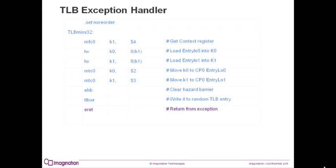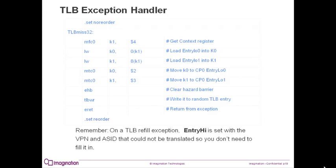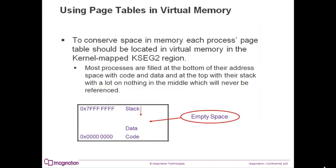Last, we use the return from exception instruction to go back to normal processing. The last line, .setReorder, tells the assembler that it can continue optimization of the code from this point. Since the TLB refill exception already filled in the virtual address and the address space identifier with the address that missed in the TLB, we only needed eight instructions to do the refill.